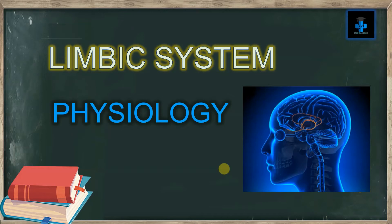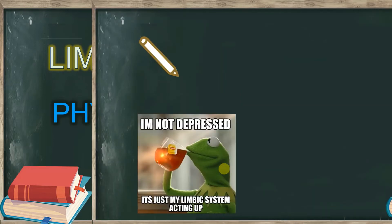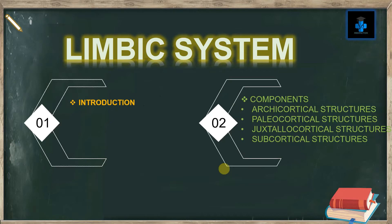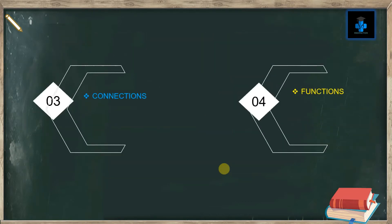Welcome to Medifaction. Today we will learn about the physiology of the limbic system. The limbic system is a set of structures in the brain that deal with emotions and memory. It regulates autonomic or endocrine function in response to emotional stimuli and is also involved in reinforcing behavior. In this video, we will cover an introduction, components of the limbic system including archicortical, paleocortical, juxtallocortical, and subcortical structures, as well as connections and important functions of the limbic system.